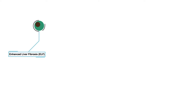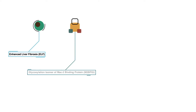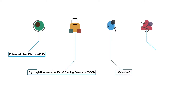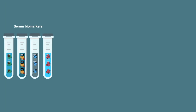The four biomarkers studied were: enhanced liver fibrosis, or ELF; glycosylation isomer of MAC-2 binding protein, or m2bPGI; Galectin-3; and soluble suppression of tumorigenicity 2, or ST2. They evaluated the serum expression of these biomarkers in CLD patients.